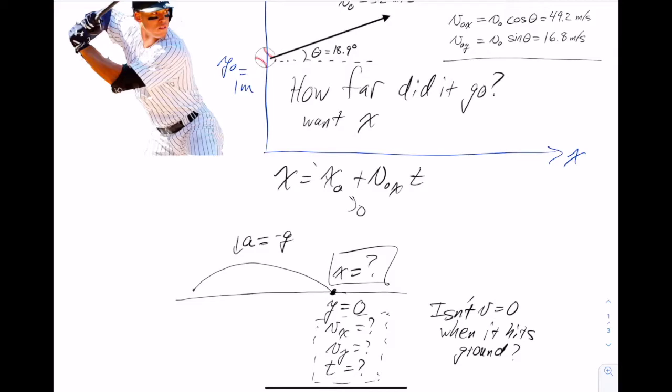Right? So the ball is definitely moving just before it hits the ground. Okay, so we want to know x. We need to find time. We can't use either of the velocity equations to help us because we don't know the final velocities. So we need to use the information that we do know, which is about the y position, right? And I'll put over here y0 is equal to one meter, x0 is equal to zero meters. And we know our initial velocities also.